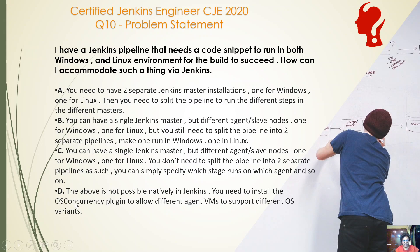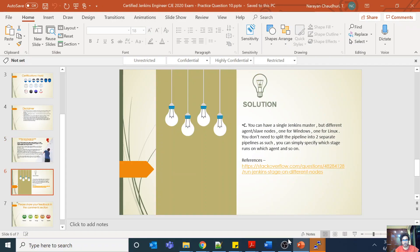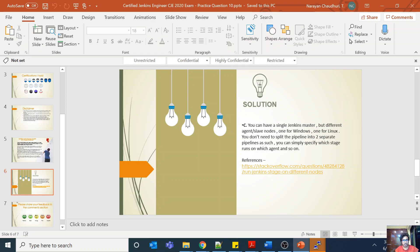Option D is irrelevant — there is nothing called the OS concurrency plugin, and this is natively possible in Jenkins via scripted or declarative pipeline. So the answer is C. You can have a single Jenkins master with different agent or slave nodes, one for Windows and one for Linux, without splitting the pipeline into separate pipelines. Thank you everyone — please pay strong focus on the distributed build architecture that Jenkins supports natively, as you will get questions like this in your exam.